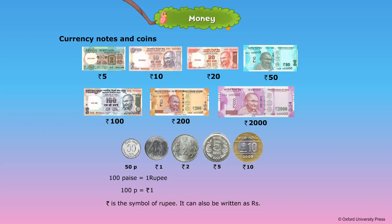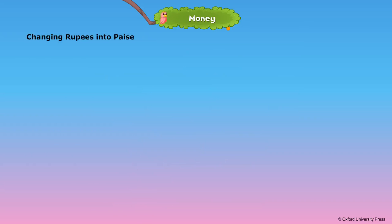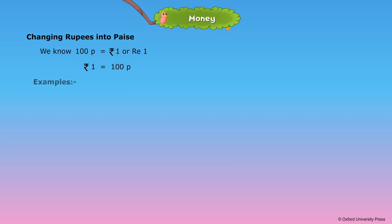Rupees is available in the form of currency note as well as coins. Let us learn how to convert rupees into paise. We know 100 paise is equal to rupee 1, so rupee 1 is equal to 100 paise.